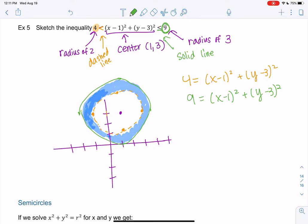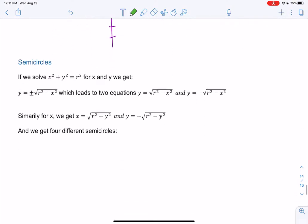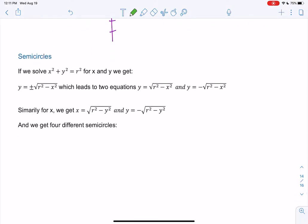So let's check out semicircles. We've probably heard of a semicircle, right, just half of a circle. So semicircles essentially happen when we solve for x or y. So if I solve for y, I would subtract x squared, and take a square root. And you get two solutions.